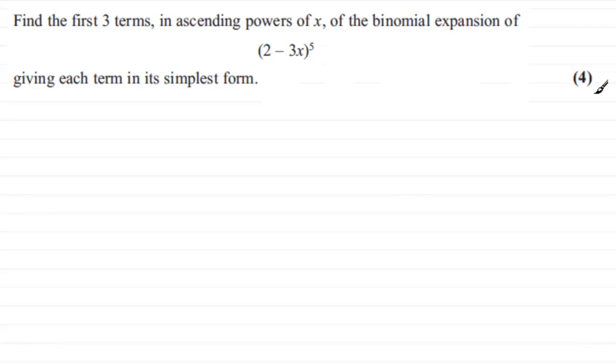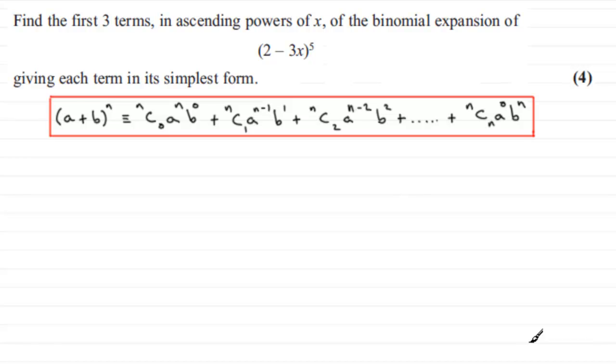Okay, well there are various ways that you can do this, but one of the best ways I think is by using this particular formula. a plus b all to the power n, where n is a positive integer, and we've got a positive integer here, 5.